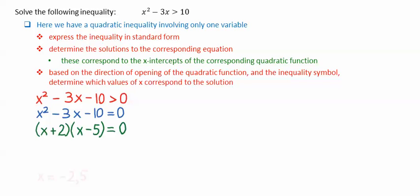The solution then corresponds to x equals negative 2 and 5. If we were then to graph the corresponding function, we have x-intercepts at negative 2 and 5.